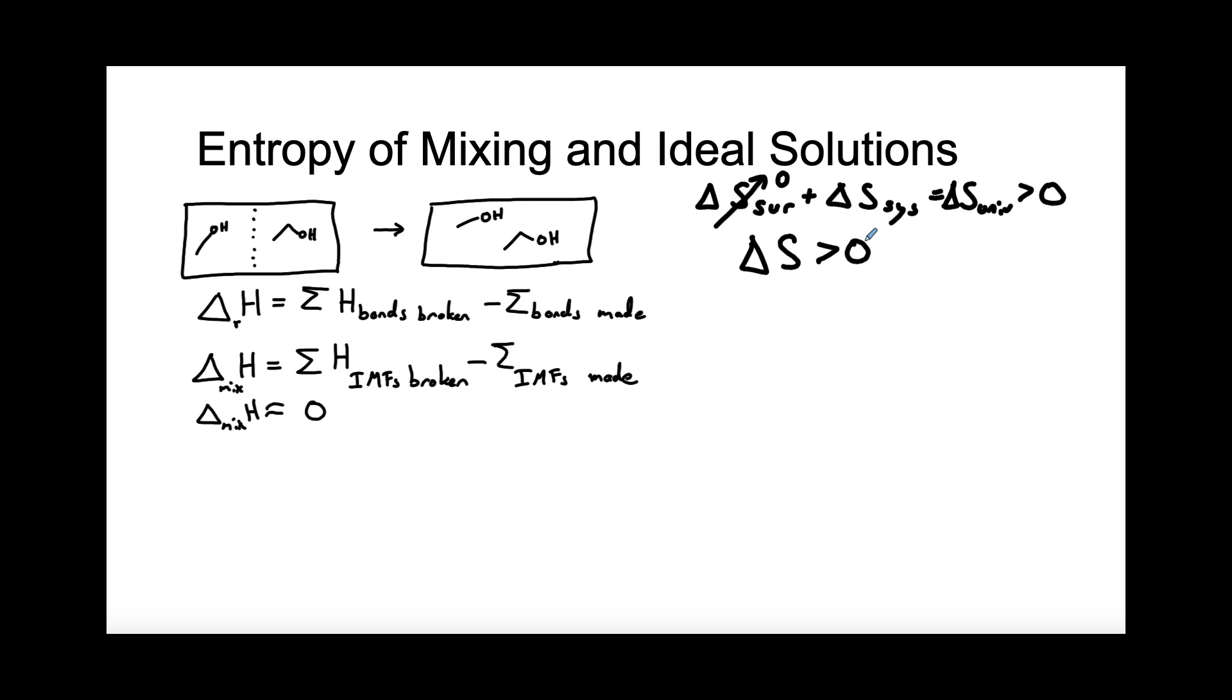So a second aspect of ideal solutions is that the delta S of mixing is going to be positive. So we have a positive delta S of mixing and a zero value for the delta H of mixing for an ideal solution.